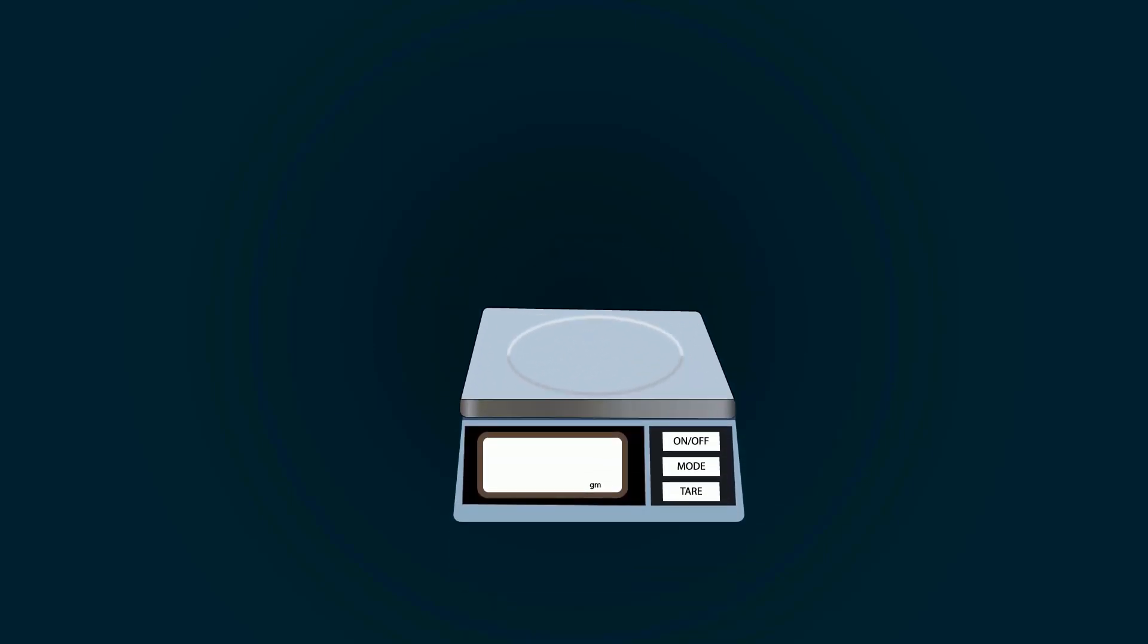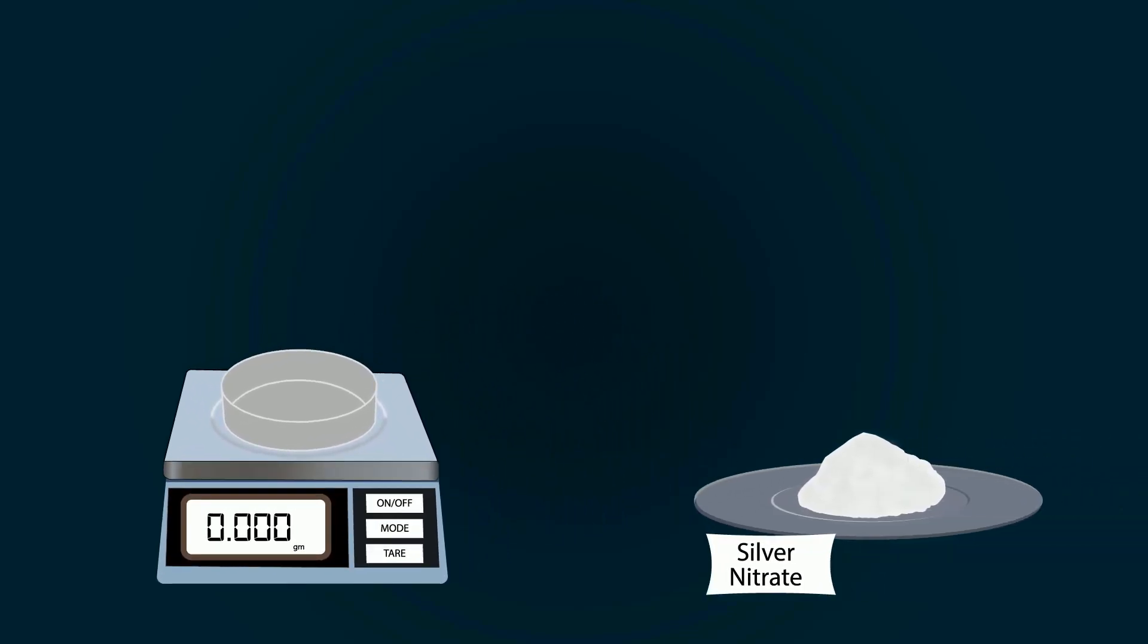First of all, take a weight balance and put a petri dish on it. Now tare it before adding silver nitrate. Add silver nitrate into the petri dish with the help of a spatula.